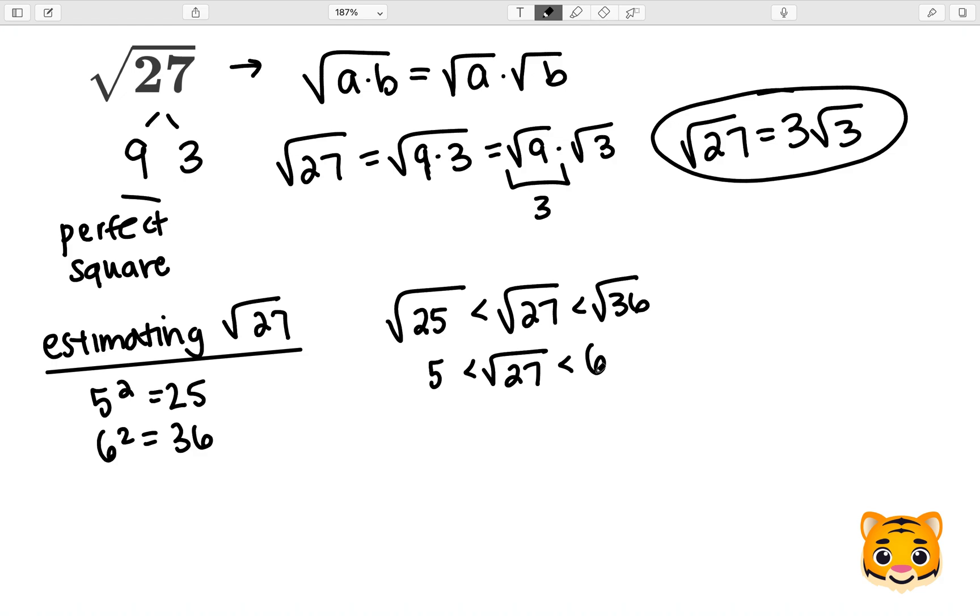In order to find the value that the square root of 27 is closest to, we will look at the difference between 27 and the perfect squares by subtracting them. So we will do 27 minus 25 to give us 2, and then 36 minus 27 to give us 9.